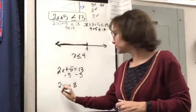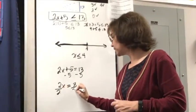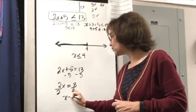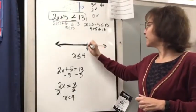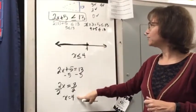So then I have 2x is equal to 8. And then I'm going to use the division property of equality, divide by 2, divide by 2. I have x is equal to 4. And this gives me my boundary point right here.